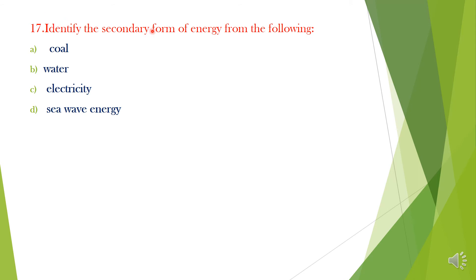Question 17. Identify the secondary form of energy from the following: A. Coal, B. Water, C. Electricity, D. Water energy. Answer is Option C, Electricity.